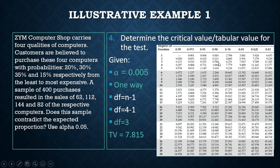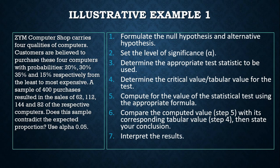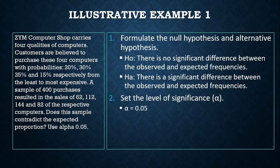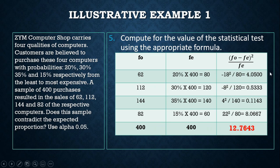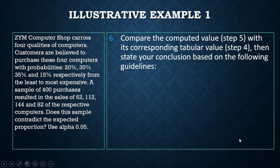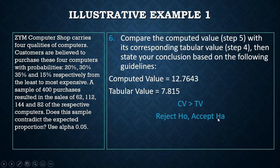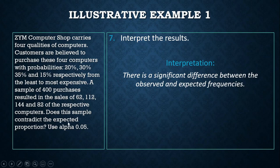Comparing the values: our computed chi-square of 12.7643 is greater than the tabular value of 7.815. Therefore, we reject the null hypothesis and accept the alternative hypothesis. The interpretation: there is a significant difference between the actual and expected frequencies. That concludes our one-way classification example.